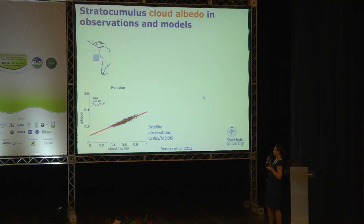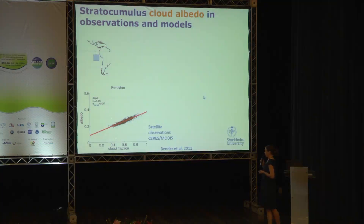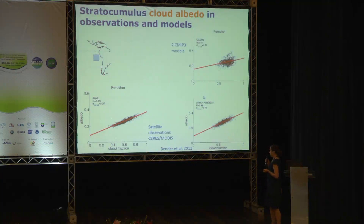First, we'll look at cloud albedo without the aerosols. We go to the Peruvian stratocumulus region off the coast of South America. I'm showing satellite observations from CERES and MODIS — albedo from CERES, cloud fraction from MODIS — monthly mean data. We see how the points from this region fall quite nicely on a straight line, and we can extrapolate to 100% cloud fraction and get a cloud albedo.